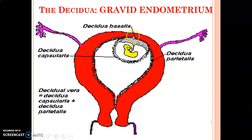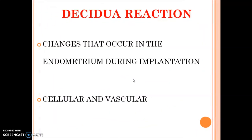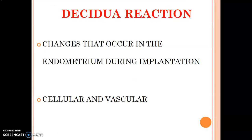At the embryonic pole where implantation occurs, that decidua is called decidua basalis. Around the abembryonic pole is the decidua capsularis, and the rest of the endometrium is covered by decidua parietalis. Decidua reactions are changes occurring in the endometrium during implantation.